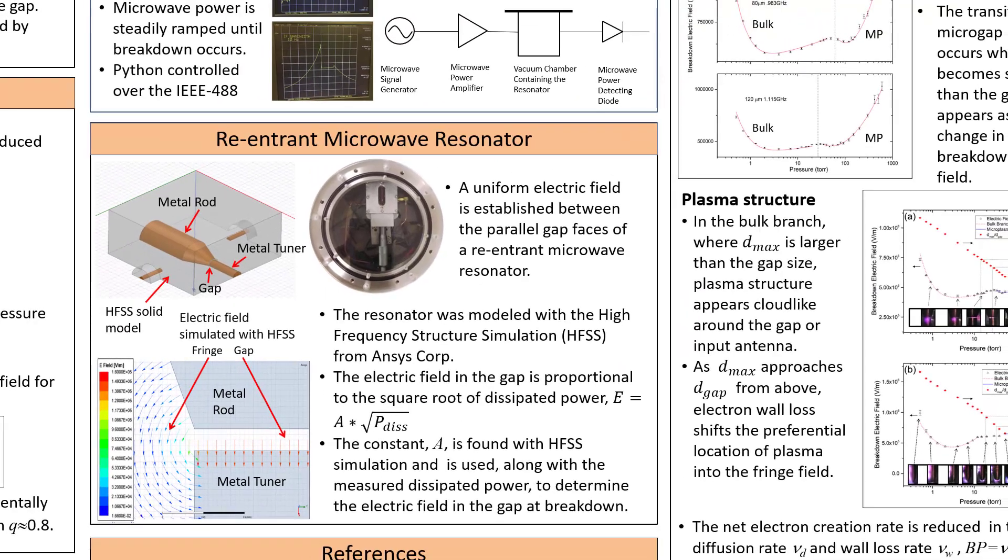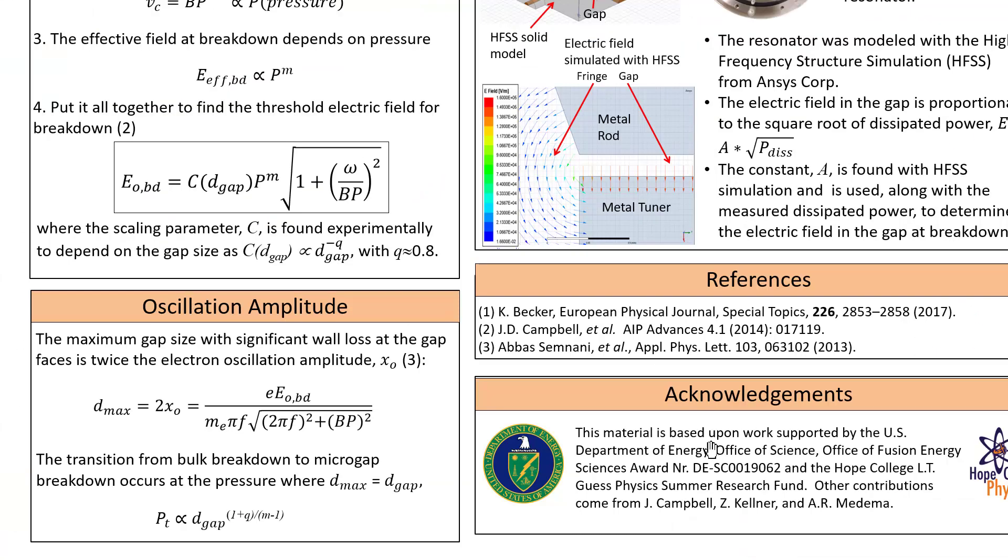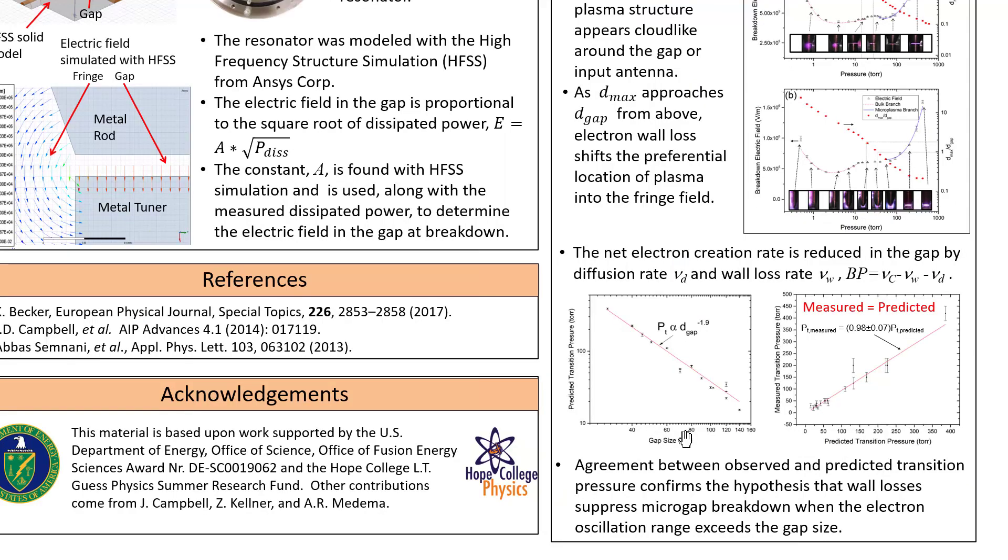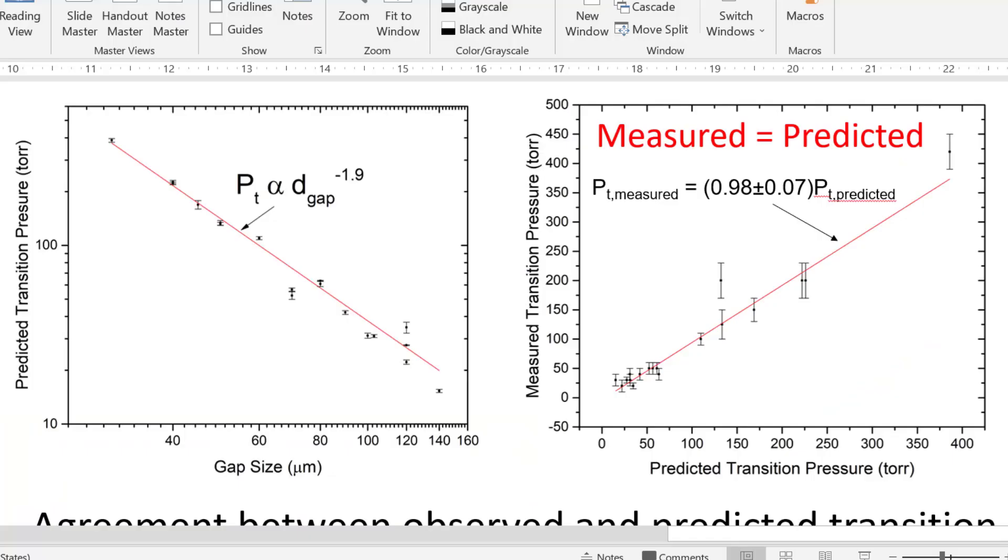Below the pressure where that ratio is one, the electrons are lost to the walls, and the preferential location for plasma is outside the gap. So the model gives us an opportunity to predict the pressure where that transition occurs as a function of gap size based on the fit parameter B, which is the collision frequency per torr. And that predicted transition pressure compares well to the measured transition pressures marked out on the breakdown curves.